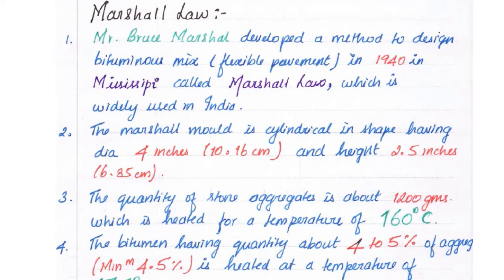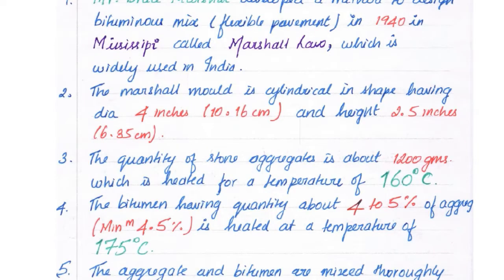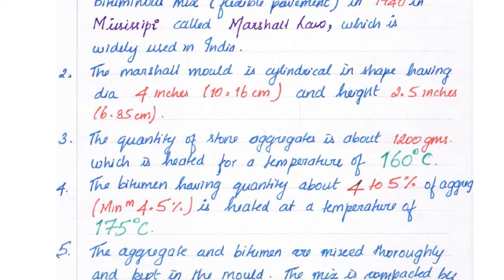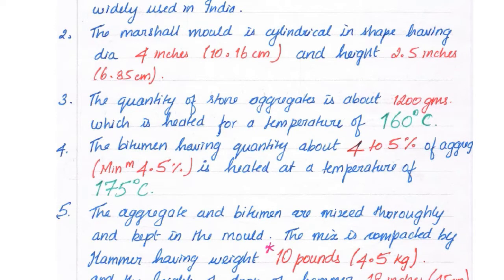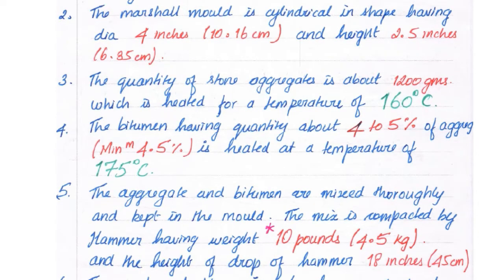Bruce Marshall developed a method to design a bituminous mix, that is flexible pavement, in 1940. This is called the Marshall Law. Marshall created the mold in cylindrical shape having diameter of 4 inches (10.16 cm) and height of 2.5 inches (6.35 cm). The quantity of stone aggregate is about 1200 grams, which is heated for a temperature of 160 degrees Celsius.